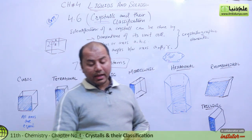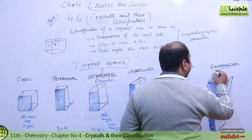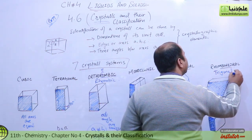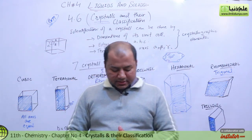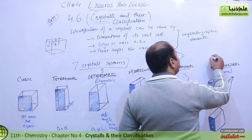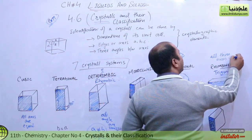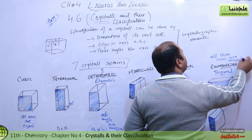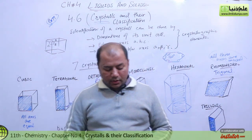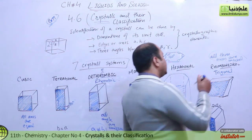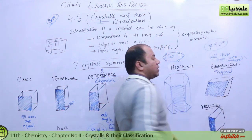Then we have the rhombohedral system, also called the trigonal system. In this system, all three axes are of equal length but all three angles are unequal — they are not 90 degrees.